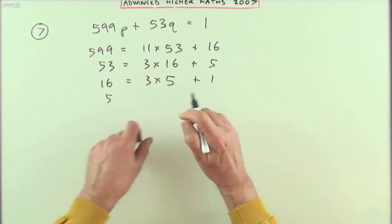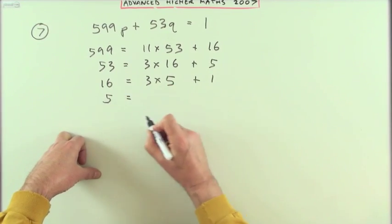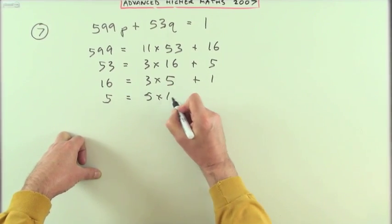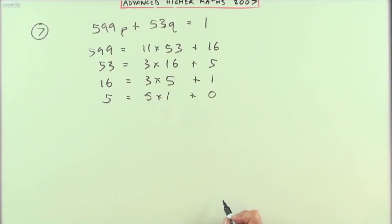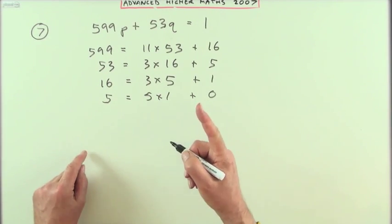And then finally I could write, again these two, 5 is equal to 5 times 1 plus 0. Which means the greatest common divisor is just 1.